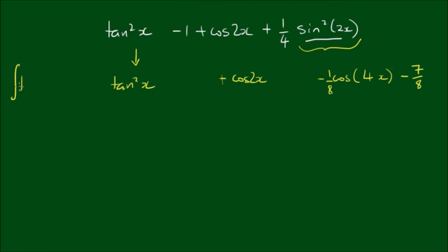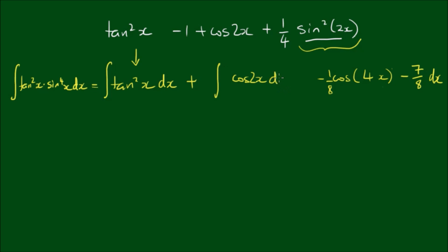So the integral of tan squared by sine to the fourth power of x dx is now equal to the integral of tan squared of x, plus cos 2x, minus one eighth cos 4x, minus 7 eighths. Because we have pluses and minuses between all the terms, I can write this as four separate integrals: the integral of tan squared of x dx, plus the integral of cos 2x dx, minus one eighth times the integral of cos 4x dx, minus seven eighths times the integral of dx.